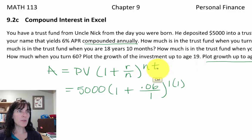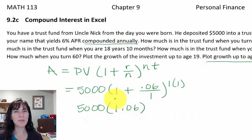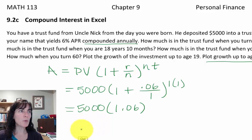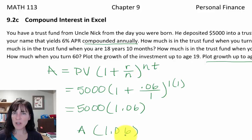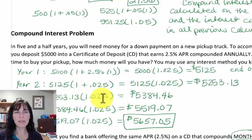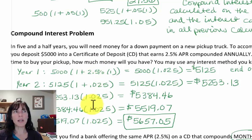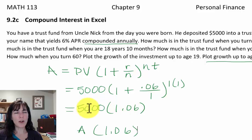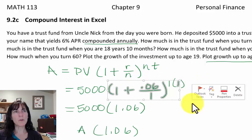For the first year, that gives 5,000 times 1.06. Then for the second year, we take whatever A we calculated and multiply by that 1.06 again. Every year we just multiply the current balance by 1.06, because our rate and number of compoundings aren't changing — it's the same factor in parentheses each time. So I need to calculate that piece so we can multiply by it over and over.